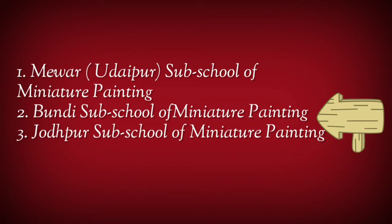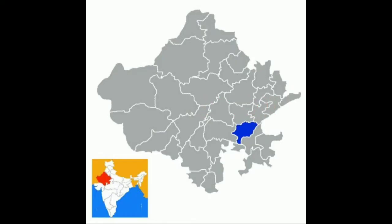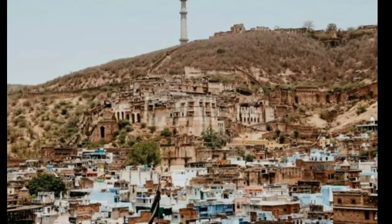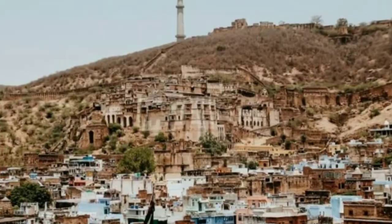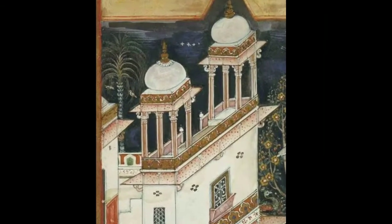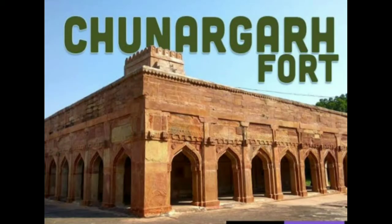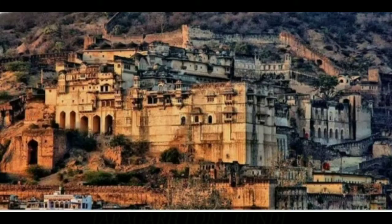Let's begin with the Bundi sub school. This school developed in Kota, Bundi, and Jalawar in the beginning of the 17th century under the Hara Rajput dynasty. The first miniature painting of Bundi was painted in Chullar in the form of a Ragmala series of painting.